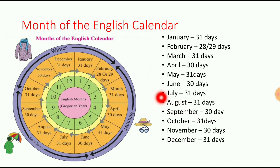The seventh month is July. J-U-L-Y, July. July has 31 days.